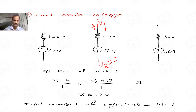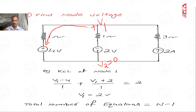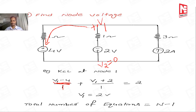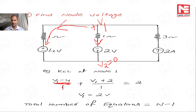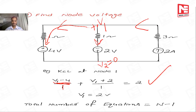Now let us write the equation. In branch 1, similar polarities are connected. Current goes from higher potential to lower potential, so the current is (V1 − 4) divided by 1 ohm. In branch 2, dissimilar polarities are connected, so the net voltage is the addition: (V1 + 2) divided by 1 ohm — this is also outgoing current. In branch 3, from the data given, 2 amperes is the incoming current. Sum of outgoing currents equals sum of incoming currents. By solving this KCL equation we get V1 equal to 2 volts.